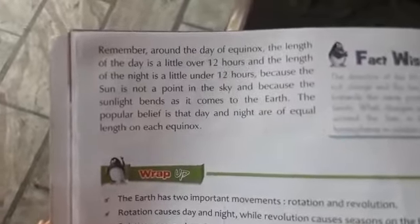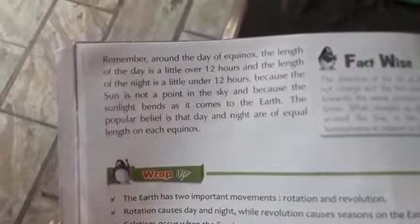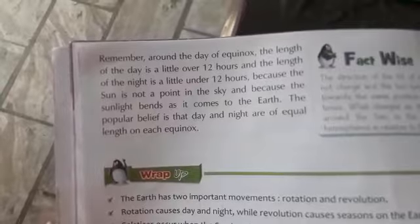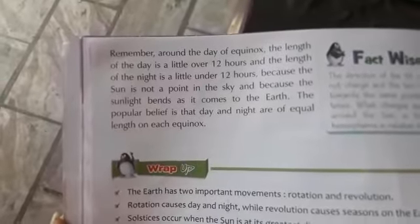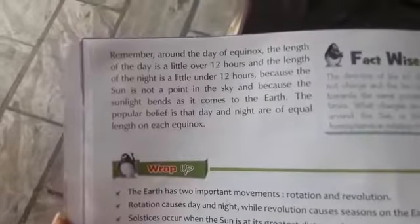Remember, around the day of the equinox, the length of day is a little over 12 hours and the length of the night is a little under 12 hours.